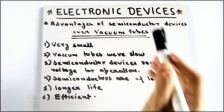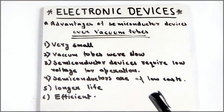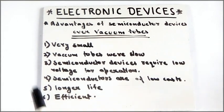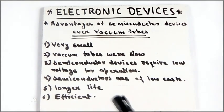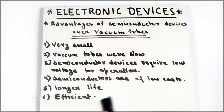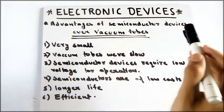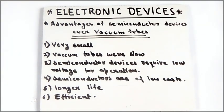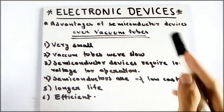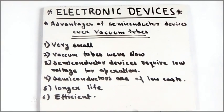Semiconductor devices also had longer life. They are also more efficient — they don't heat up and they don't waste energy, they simply use it. So semiconductor devices were really better than vacuum tubes, and that's why vacuum tubes were replaced and the whole world was changed.